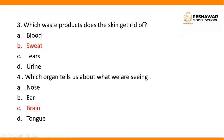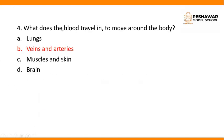Number 4: Which organ tells us about what we are seeing? Our brain. We use our eyes to see, but our eyes send signals to the brain, and then the brain tells us what we are seeing. Number 5: What does blood travel in to move around the body? Veins and arteries — veins and arteries carry blood throughout the body.